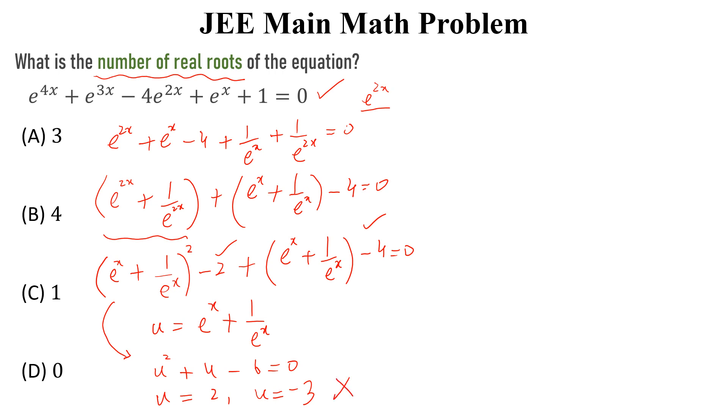But, u cannot be minus 3 because e to the power x is greater than 0. So, u is equal to 2 and e power x plus 1 over e power x is equal to 2.